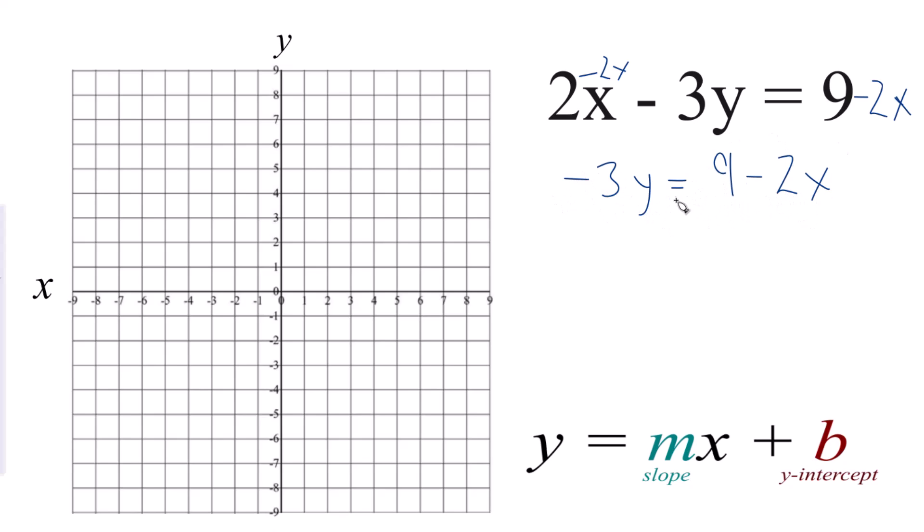I'm going to divide both sides by negative 3. So now we end up with y equals 9 over negative 3 is just negative 3. And then a negative 2x over negative 3 is just a positive 2 thirds x.